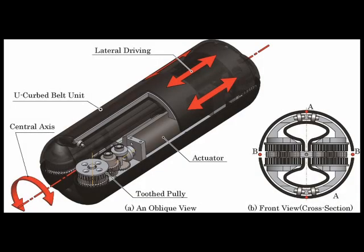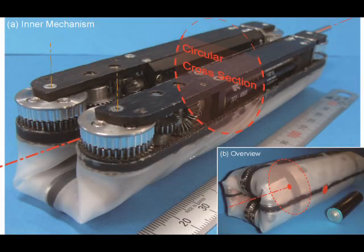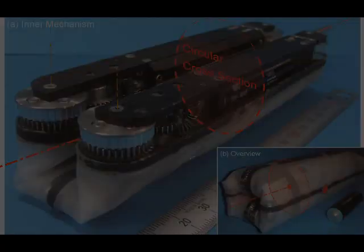Therefore, we developed the mechanism driven by the tooth belt with a curved configuration as a whole, as shown in this figure. This mechanism maintains the inner unit even if the driving force is very high, and there is a significant supporter at the center of the unit. That is the important point to realize the omnidirectional driving function.